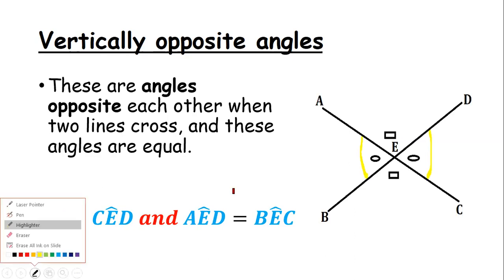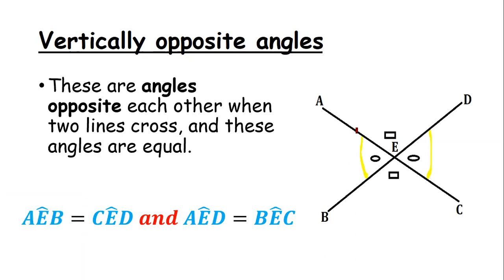We've also got this angle being equal to that angle. So we can say angle AEB is equal to angle CED, and angle AED is equal to angle BEC, because they are vertically opposite angles.